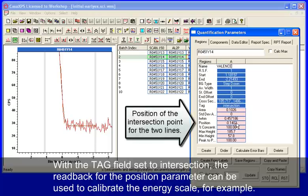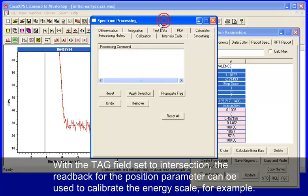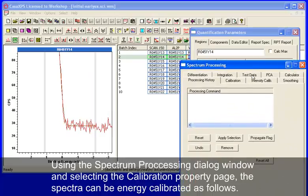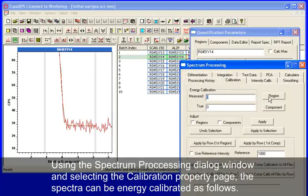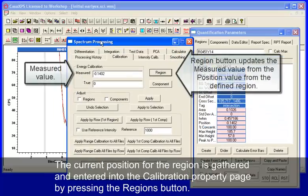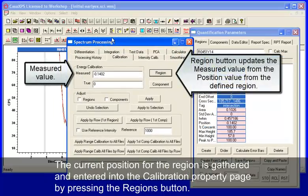To do that, what we need to do is use the calibration property page, press the button that says region, and that brings in from the selected region the position for that region.